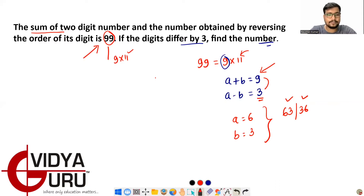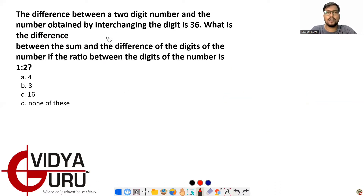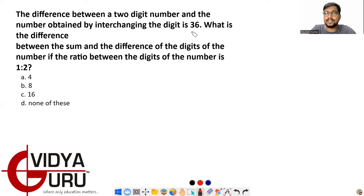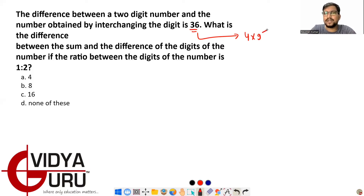Question 2: The difference between a two-digit number and the number obtained by interchanging the digits is 36. Whenever 'difference' is mentioned, remember it is a multiple of 9. So 36 = 9 × 4, meaning a − b = 4 (taking 'a' as the larger tens digit).